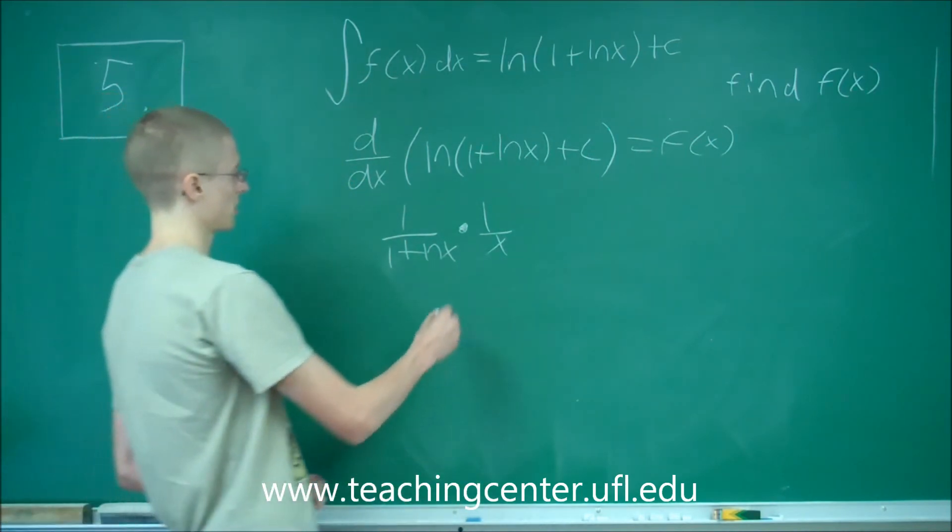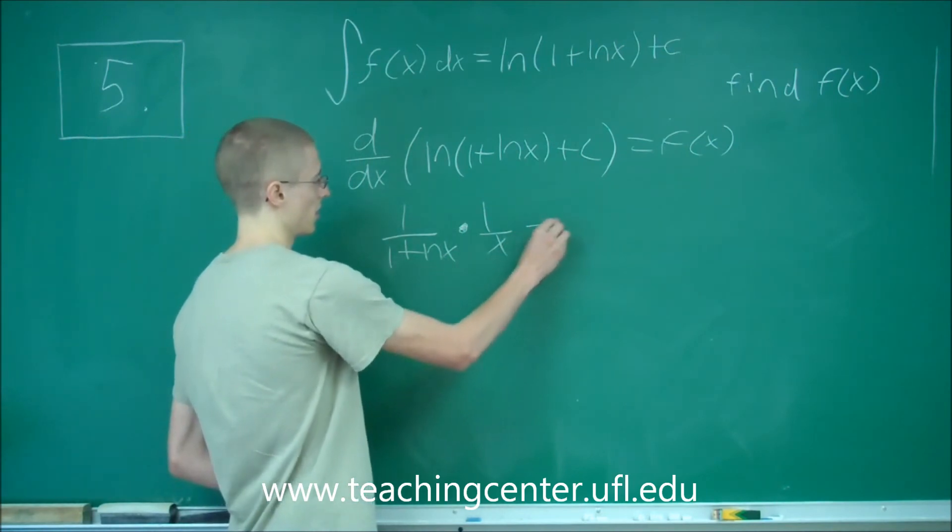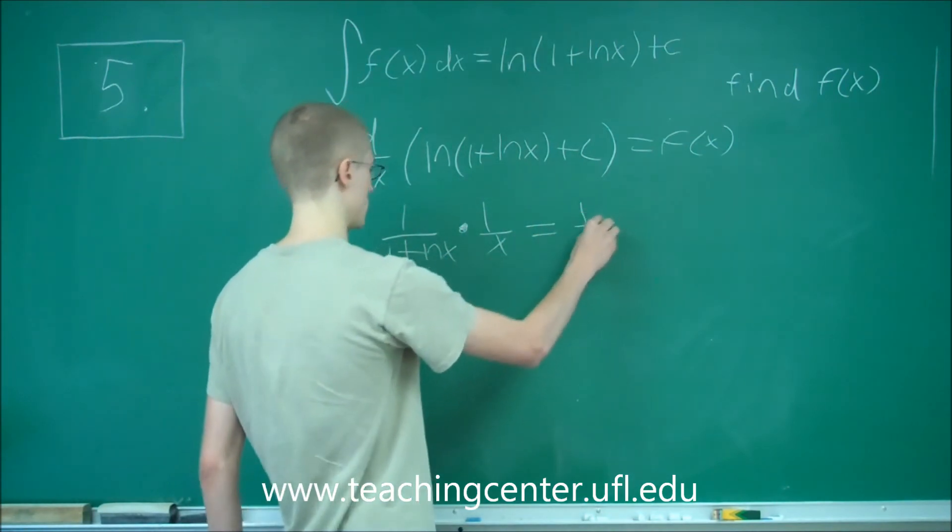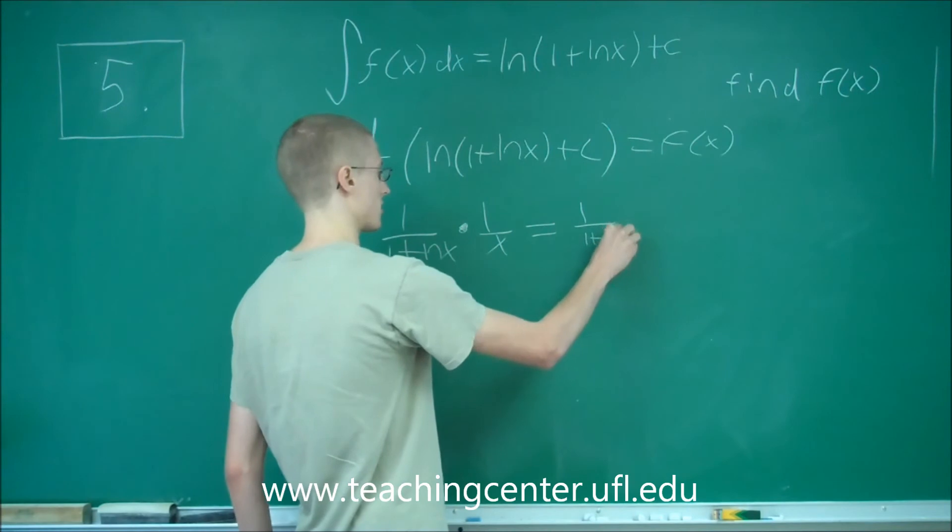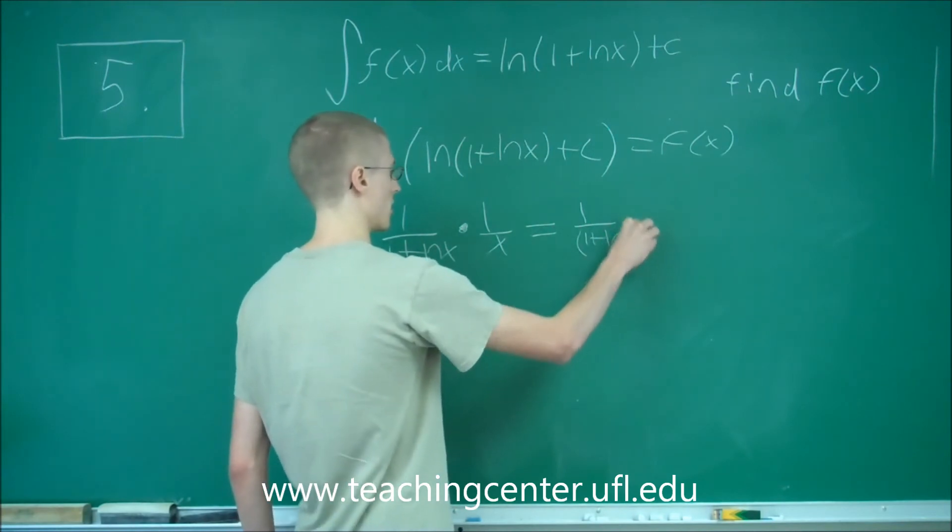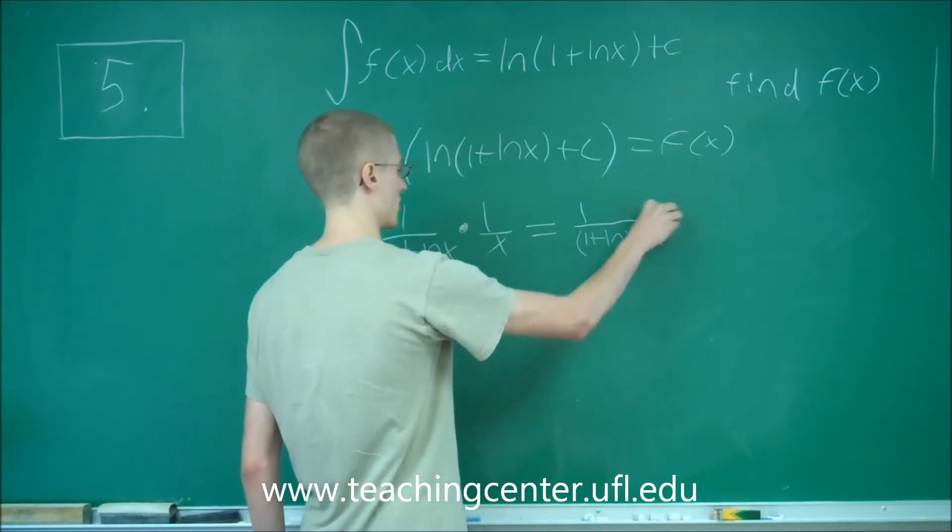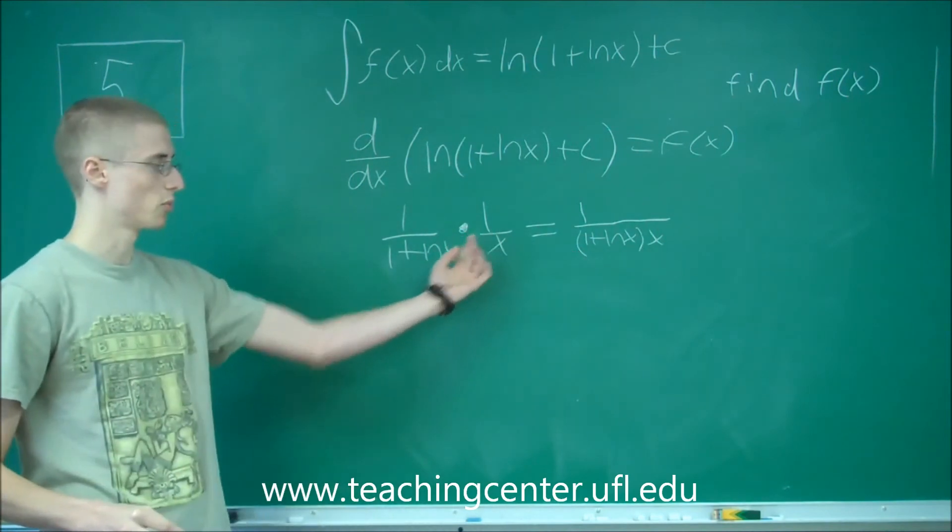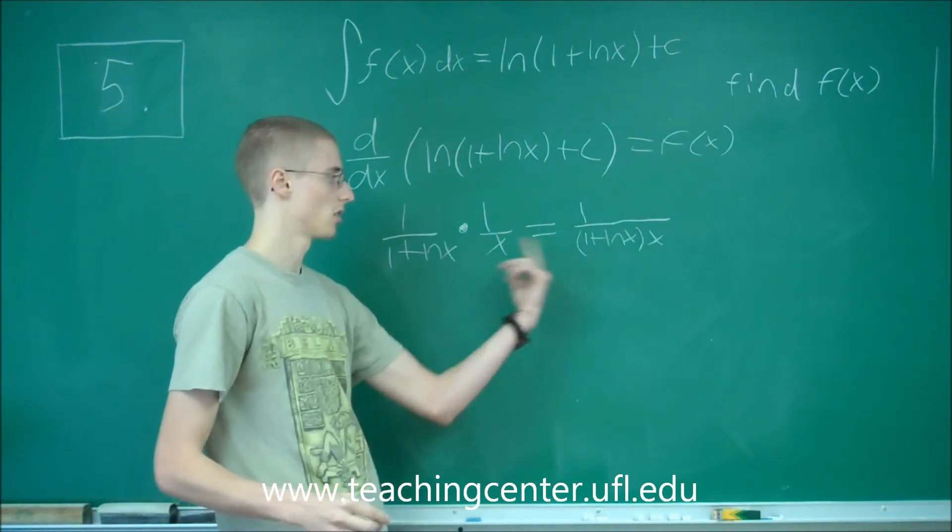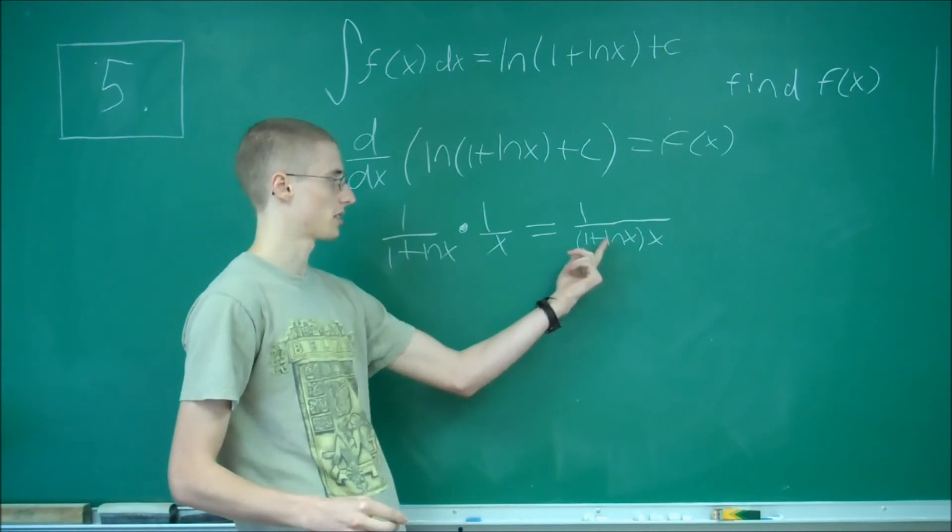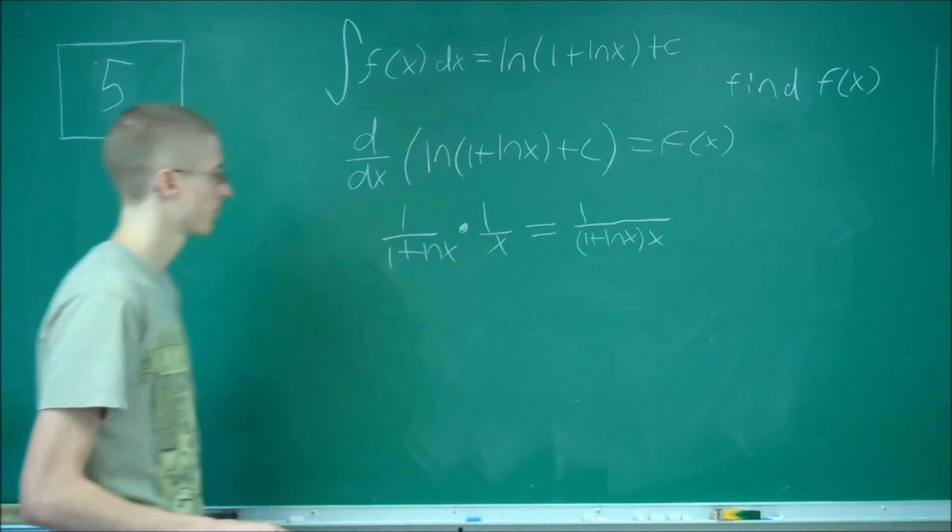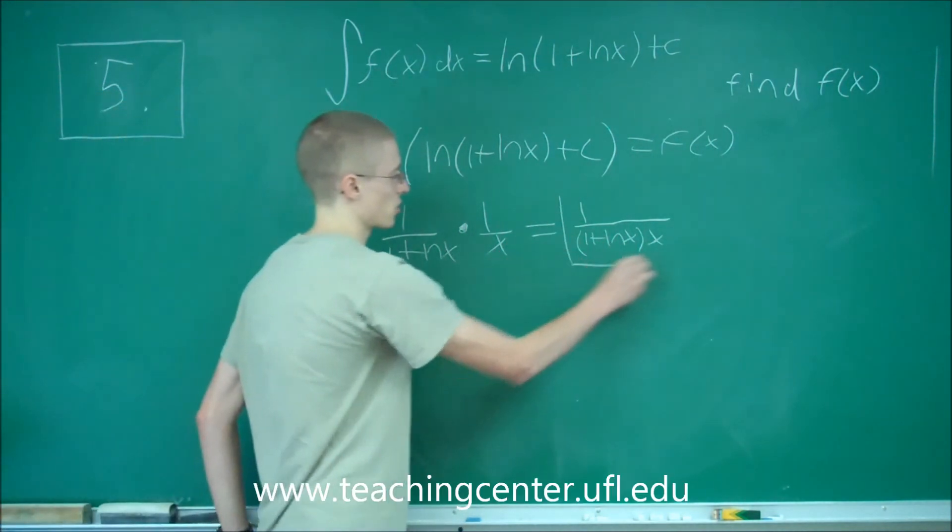f(x) equals 1 over (1 plus ln of x) times 1 over x, which is just 1 over the quantity (1 plus ln of x) times x. And that is our answer.